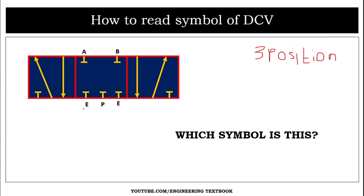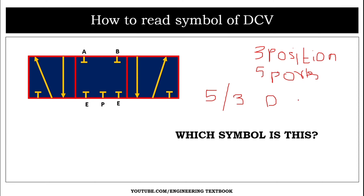We have to count the number of ports in only one particular box. Let's count: port A, port B, port E, port P, port E again — so one, two, three, four, and five. There are five ports. As there are three positions and five ports, this is a five by three direction control valve.